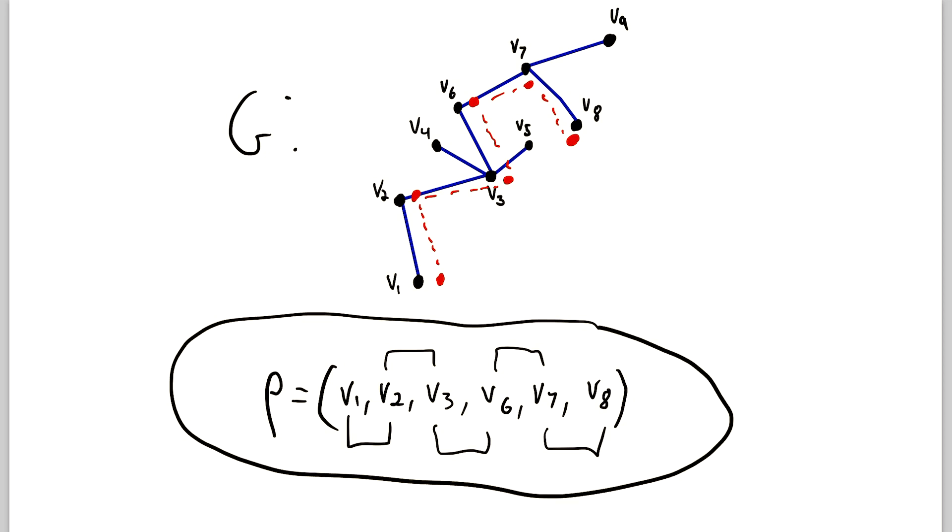So again, this is a path, because it's a sequence of vertices, where consecutive vertices are adjacent in the graph, and no vertex is repeated. And that is what a path is.